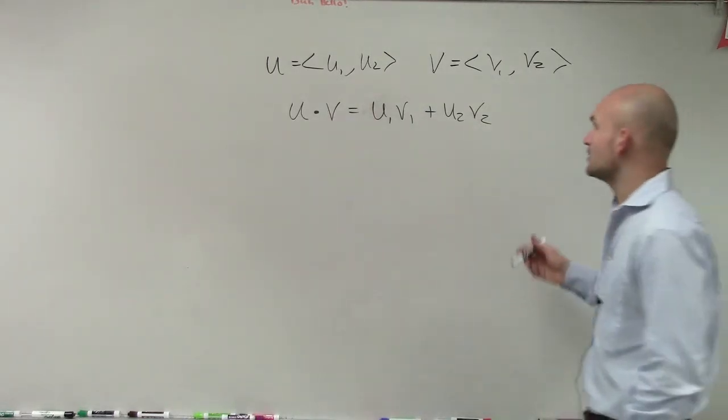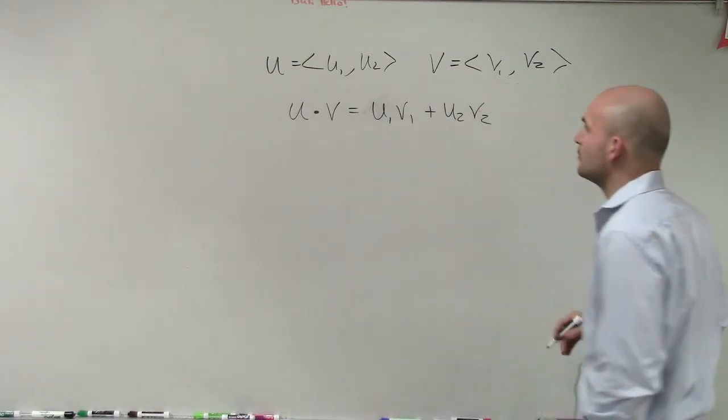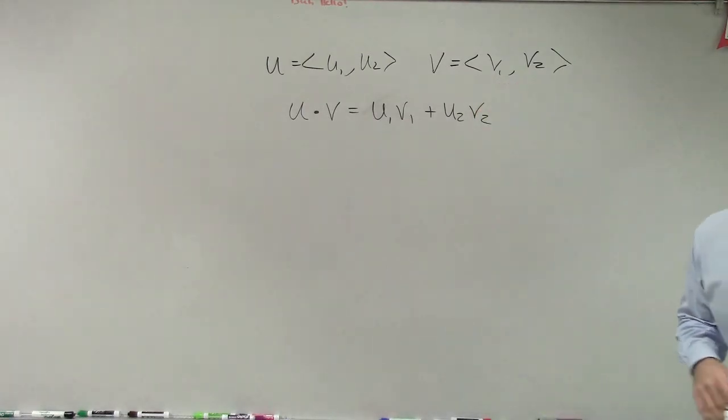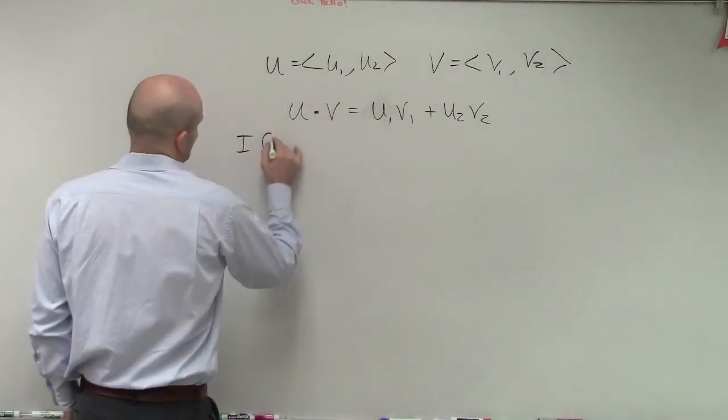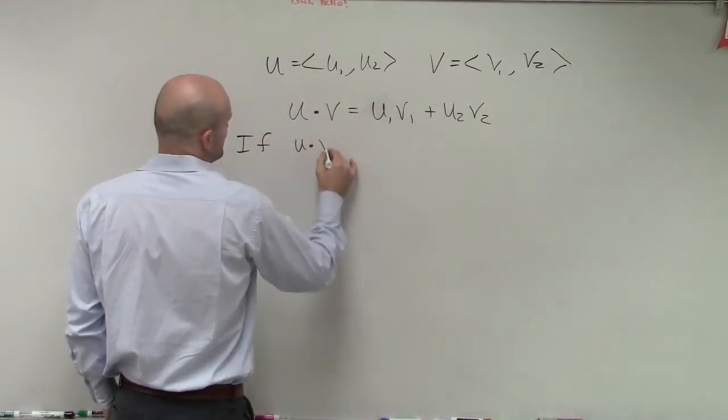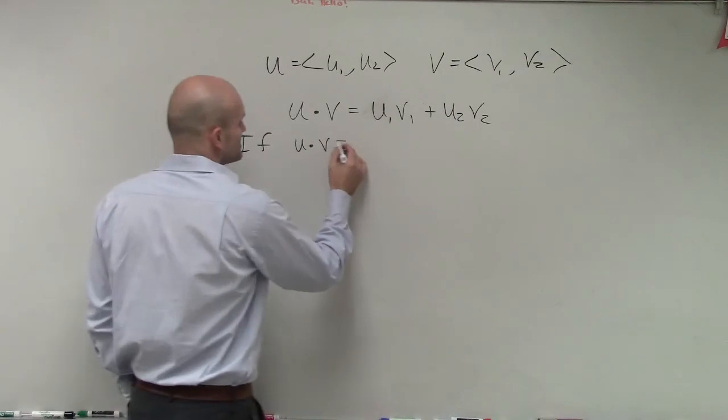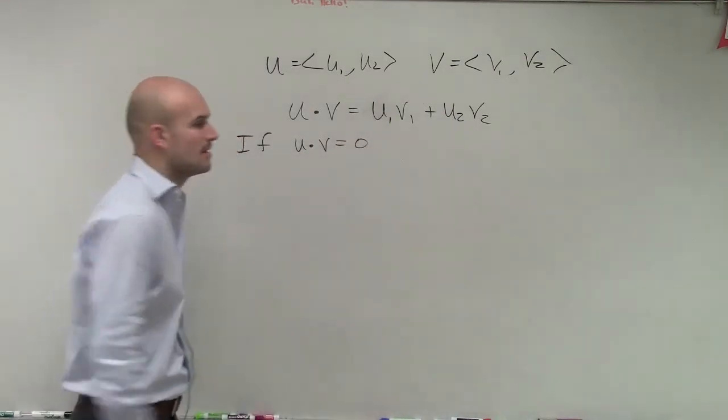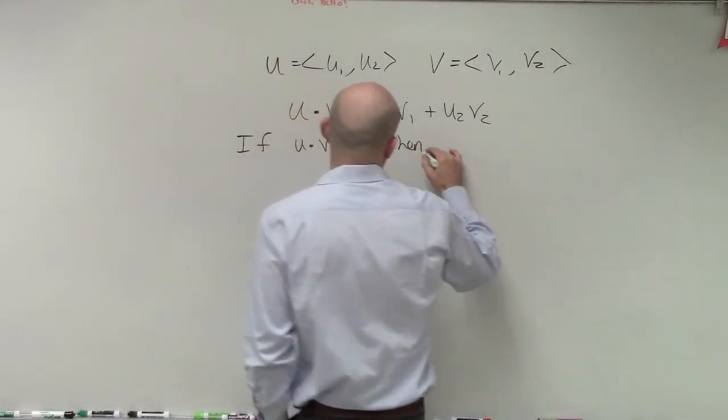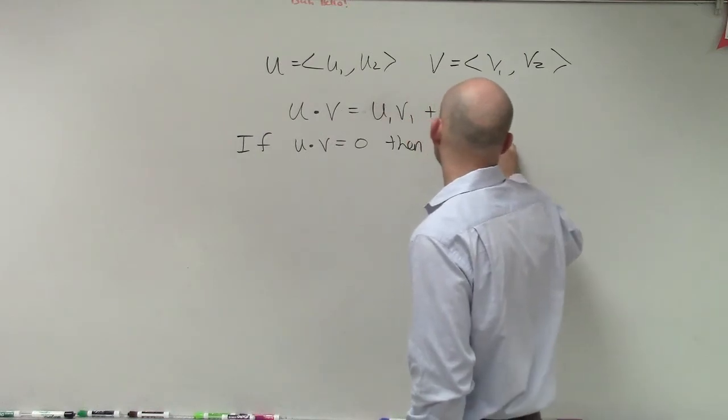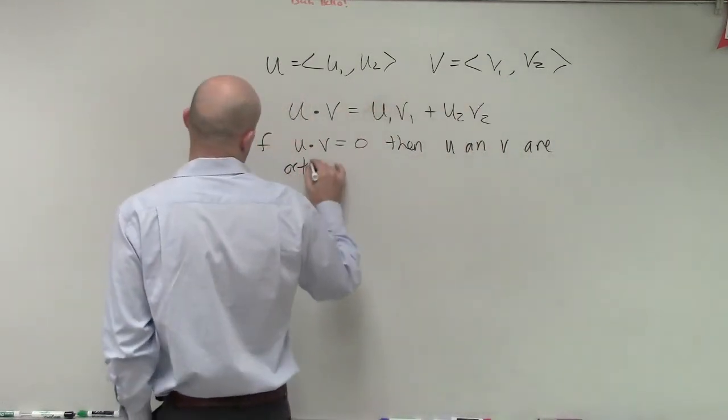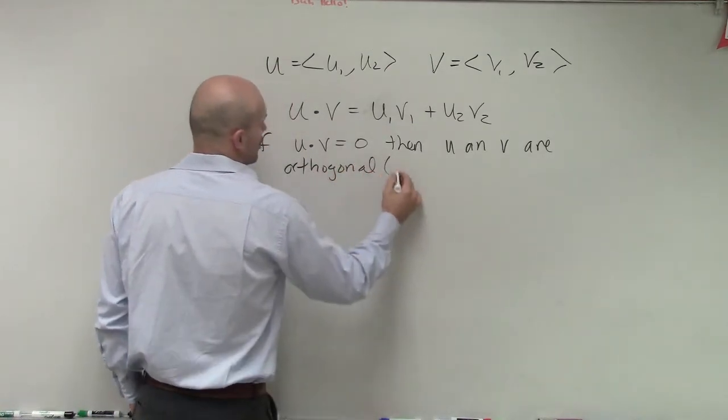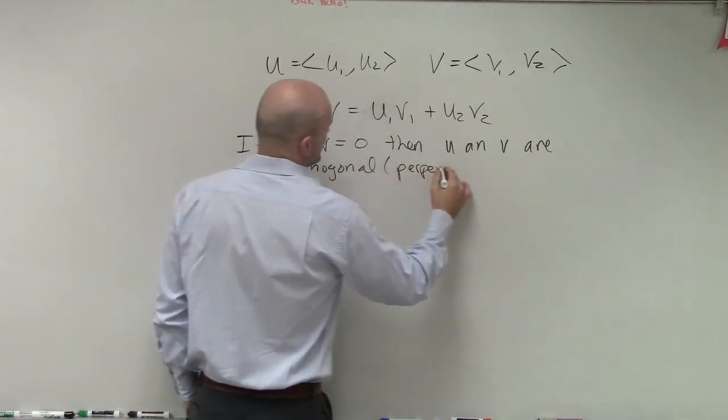If your scalar, or if u1·v1 plus u2·v2, your dot product, if the dot product of your two vectors is equal to zero, then u and v are orthogonal, or what we call perpendicular.